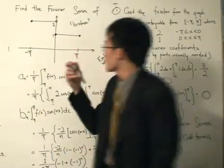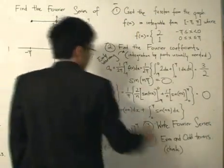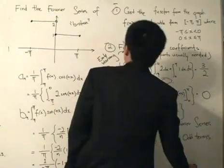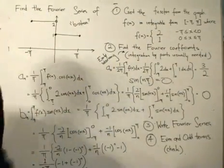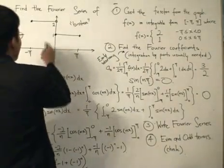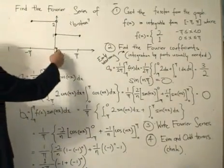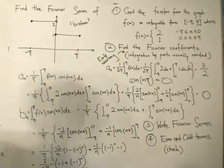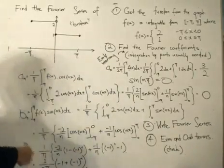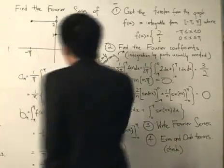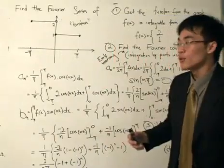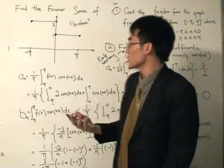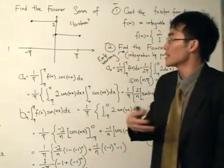We are given a certain graph which I've conveniently drawn over here. This is the graph and it's defined from minus pi to pi. Basically, from x equals minus pi to zero, the function gives us two, and from zero to pi it is given as one. I've written the word 'broken' over here because it's a term I like to use — it's a broken function because we need to split up the domain. In Fourier series, you will sometimes get a lot of these broken functions.